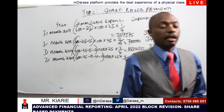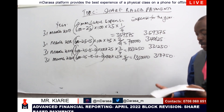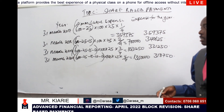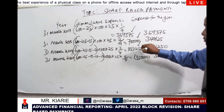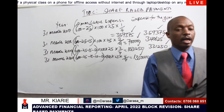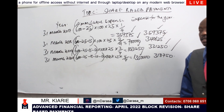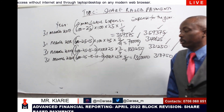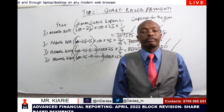That is how the transactions should appear in the books of Beta Limited. The examiner will mark the 8 entries accordingly. That is how you account for a share-based payment scheme. If you have any questions, kindly raise them using the appropriate platform. Thank you.